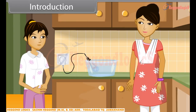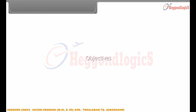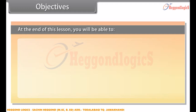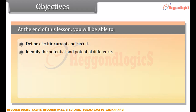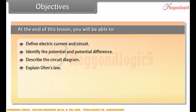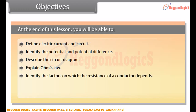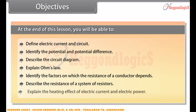Let me explain. Children, in this lesson you will learn about electric current, electric circuits, and effects of electric current. At the end of this lesson, you will be able to: define electric current and circuit; identify the potential and potential difference; describe the circuit diagram; explain Ohm's Law; identify the factors on which the resistance of a conductor depends; describe the resistance of a system of resistors; and explain the heating effect of electric current and electric power.